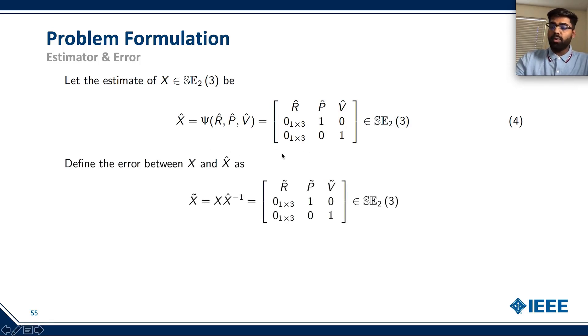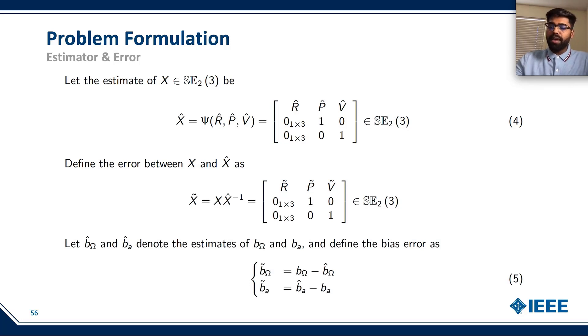We can consider the error between X and X hat using this particular equation, where X tilde equals X multiplied by X hat to the power of minus 1. And we define the bias to be B tilde omega and B tilde a, where B tilde omega equals B omega minus B hat omega, and B tilde a equals B hat a minus B A, respectively.